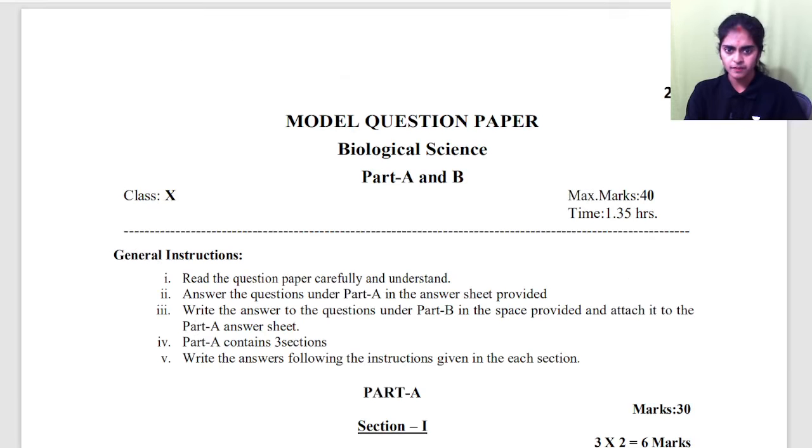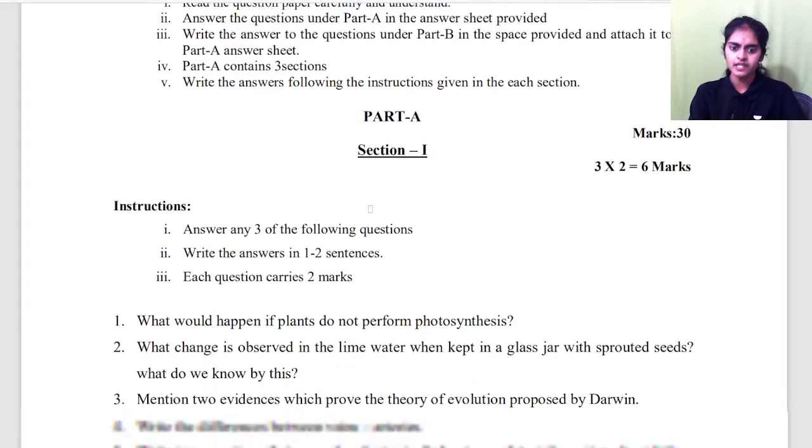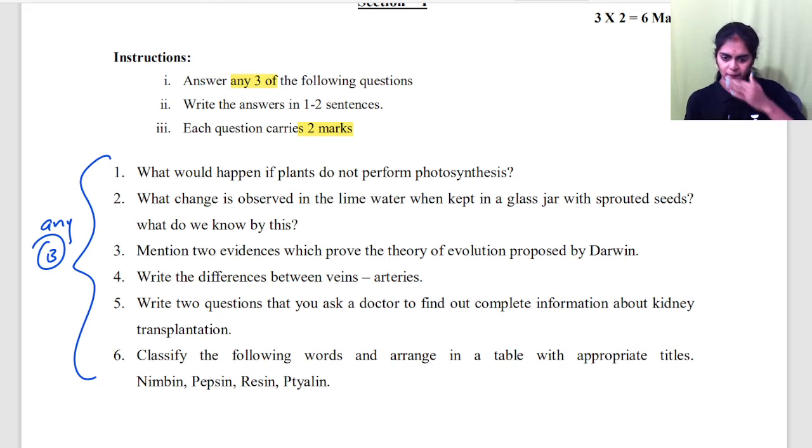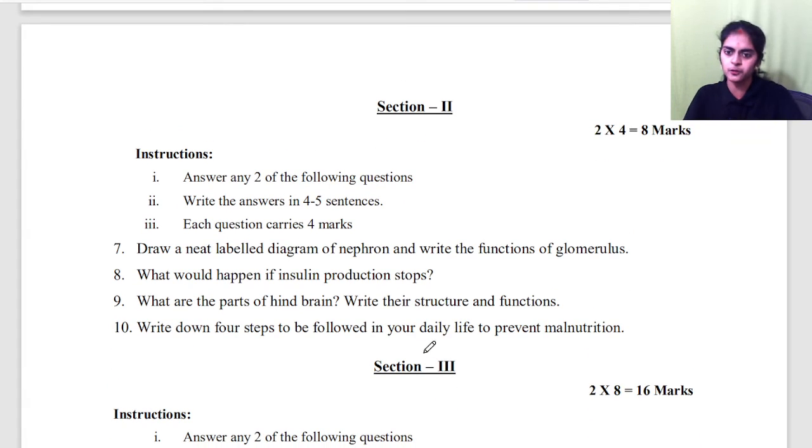Then moving on to biology paper. So here, in biology also, same pattern, part A and part B. 40 marks and 1 hour 35 minutes again. So, part A, section 1, 3 questions you should answer. Any 3, 2 marks each. So, the same pattern, any 3, 2 marks each. Then if you see, the next section, section 2.